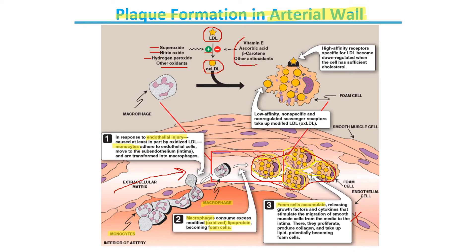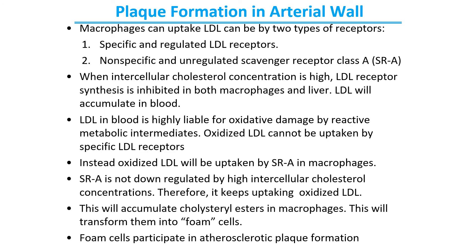Antioxidants like vitamin E, vitamin C, and beta-carotene (vitamin A) stop the process of LDL oxidation. If LDL becomes oxidized for any reason, this oxidized LDL is taken up by macrophages through scavenger receptors, which are uncontrollable — they are not downregulated. So LDL keeps going in, and eventually so much accumulates in the macrophage that it is converted into a foam cell. This is what causes foam cell formation, which gives rise to plaque formation as shown in the diagram.